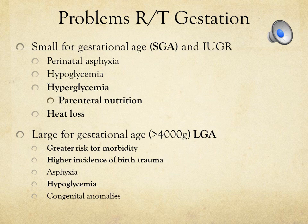Large for gestational age, or LGA, babies are above the 90th percentile and have greater risk for morbidity compared to SGA babies. Due to their size, they're at greater risk for birth injury and trauma. It's important to remember that an LGA baby may still be preterm — weight does not determine gestational age; the duration of time in the uterus does.